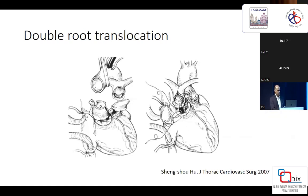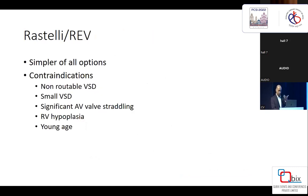Double root translocation is more or less similar to the Nikaido approach, separating both aorta and pulmonary artery and harvesting them separately. There are several variants of these procedures, including pulmonary translocation — which someone else will address — that deals only with the RVOT. Rastelli and REV remain very popular surgeries, simpler than most options for TGA with VSD and PS, apart from arterial switch with simple LVOT resection.